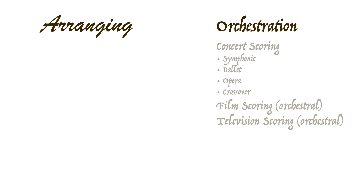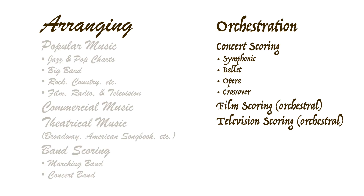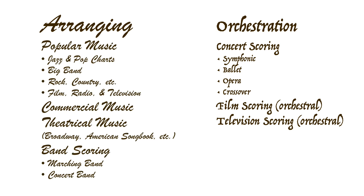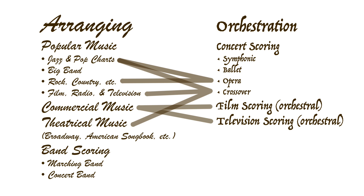According to some of these categories, an orchestrator arranges music for concert, film, and television productions, while an arranger's work is more along the lines of popular music, band scoring, and musical theater. Of course, there's a lot of blurring of lines, and many orchestrators are comfortable with just about any category of musical arranging — from making a quick lead sheet all the way to orchestrating a symphonic work.